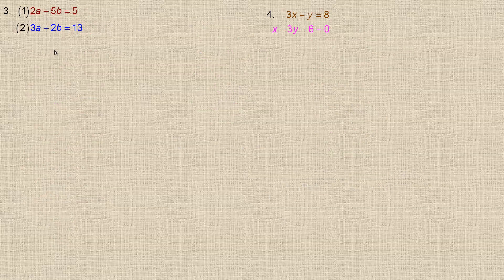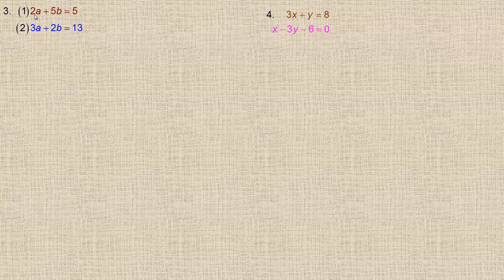For the third example, this system is more convenient to solve by elimination. The reason is that the coefficients of a and b have no ones or negative ones, so solving for either variable would introduce fractions. Elimination is more convenient here.